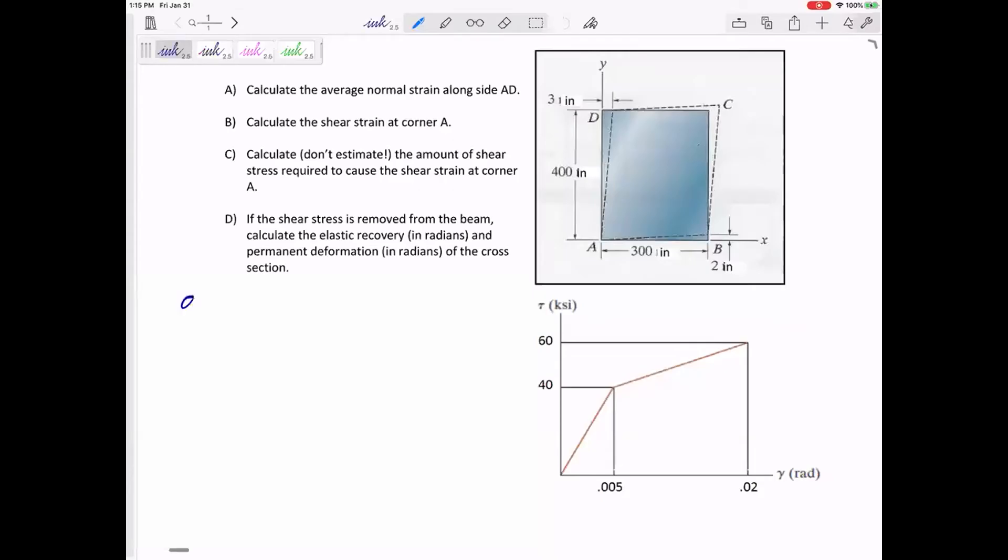Alright, so listen up. Part A, I got a strain of 0.0000281. Did y'all get that? Maybe we could do inches per inch, or we could leave it unitless.